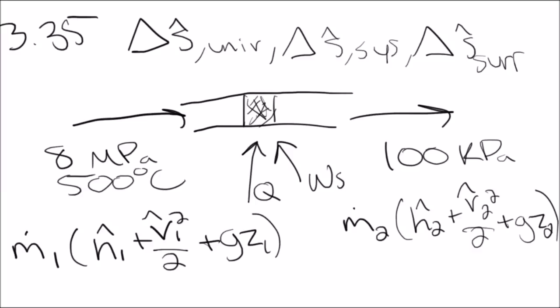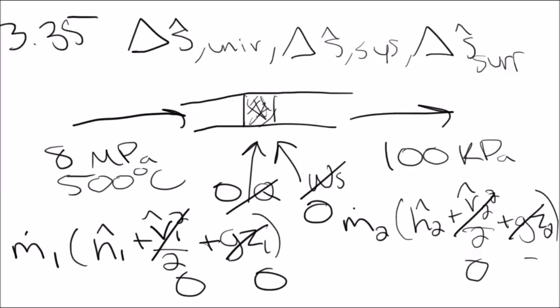Now we make assumptions about the throttling device. The plug is too small to allow non-negligible heat transfer, so Q equals zero. There is nothing doing shaft work on the device, so shaft work is zero as well. The problem doesn't mention any significant changes in speed of the streams, so the kinetic energy terms cancel. It also doesn't mention any change in elevation, so the potential energy terms cancel out to zero.